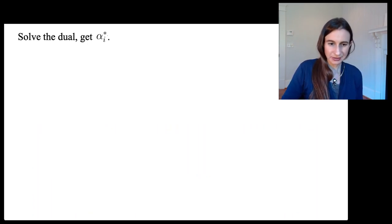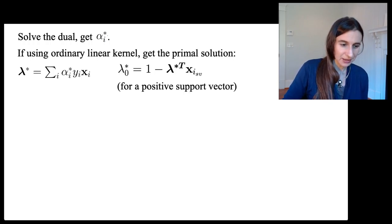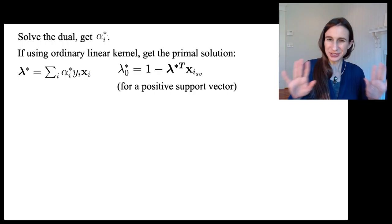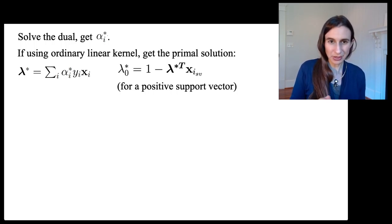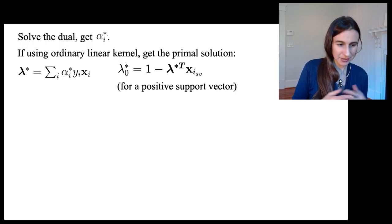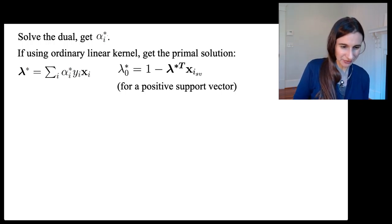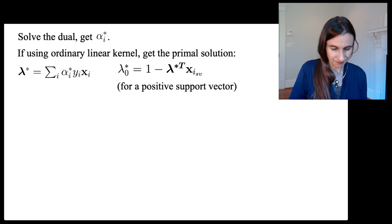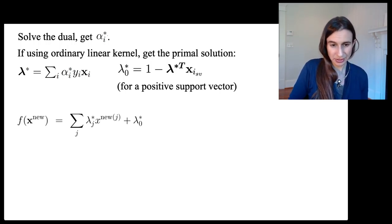Here's how we're going to do it. We'll solve the dual problem and get the alpha_i stars. If we were not using a kernel—if we're just using inner products as our kernel in our original space—then I would normally get the primal solution as we discussed before. We would get lambda star and lambda_zero star, which we derived earlier. Lambda_zero star you get from a positive support vector, which here I've called i_sv.